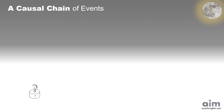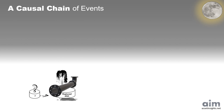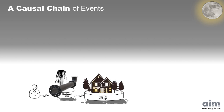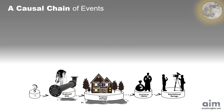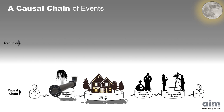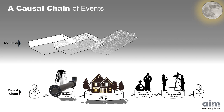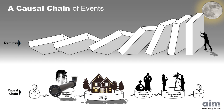It starts with a quiet crack underground, barely noticeable, but then, like a line of dominoes, the consequences unfold. A ruptured pipe leads to a flooded building that turns into insurance claims, news crews, and reputational fallout. This isn't just bad luck — it's a chain of cause and effect, and if we can see the story early, we just might change the ending.